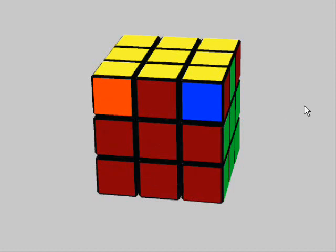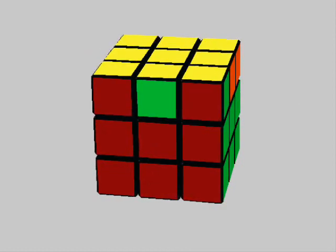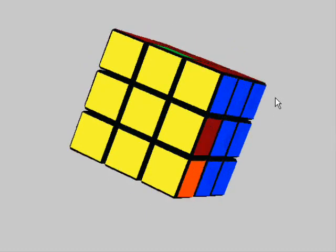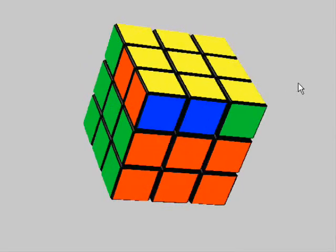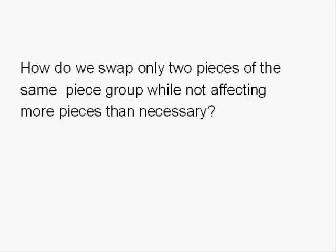We can start by doing a three-corner cycle. From there, all we need is a quarter turn. Rotating the cube, we now have two corners swapped. But there is a problem: all four edge pieces on the 3x3 are out of place. There were too many edges out of place to simply swap two corners. We need to ask how to swap only two pieces of the same piece group while not affecting more pieces than necessary.